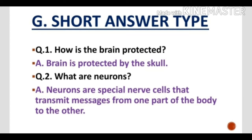Nerve cells transmit messages from the body parts to the brain or spinal cord, and from the brain and spinal cord back to the body parts. So, these are neurons.